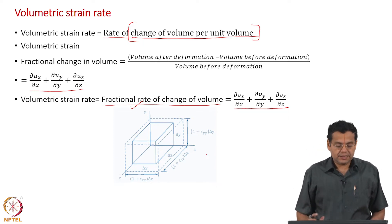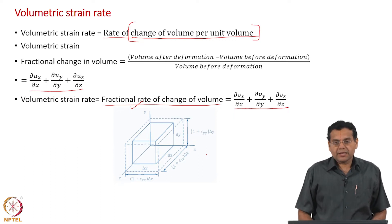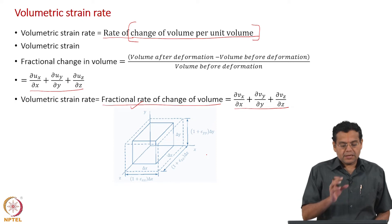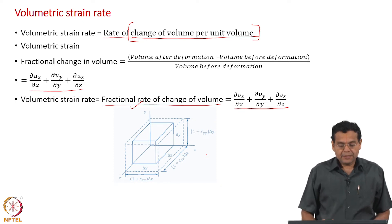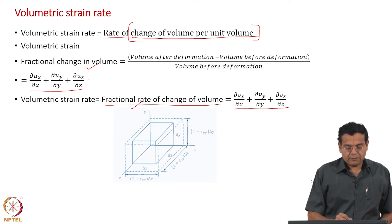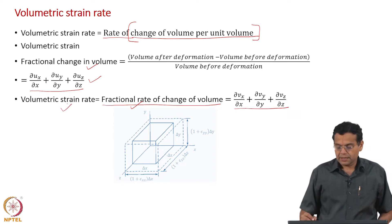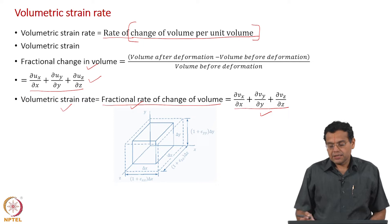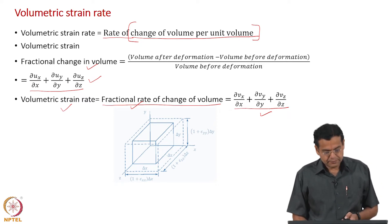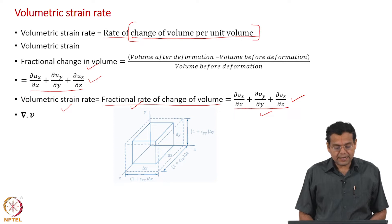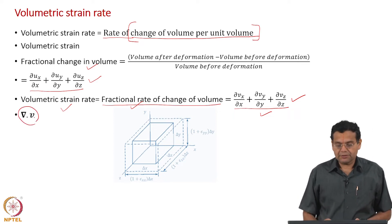Just as we had normal strain and shear strain rate for solids — where normal strain in terms of displacement gradient became normal strain rate with velocity gradient on the right-hand side — here we have volumetric strain in terms of displacement gradient, and so volumetric strain rate is expressed in terms of velocity gradient: replace displacements with corresponding velocities. Just as fractional change in volume was divergence of the displacement field, volumetric strain rate is the divergence of the velocity field.